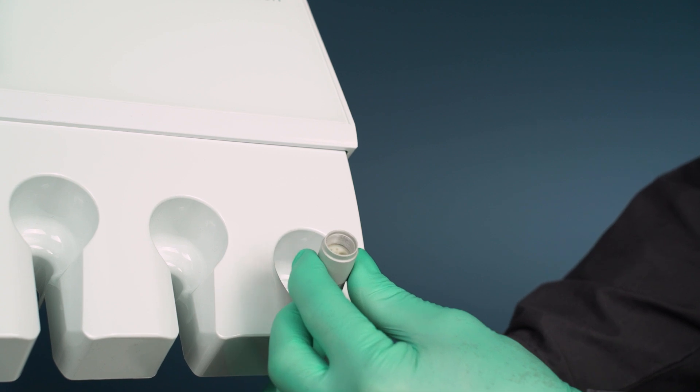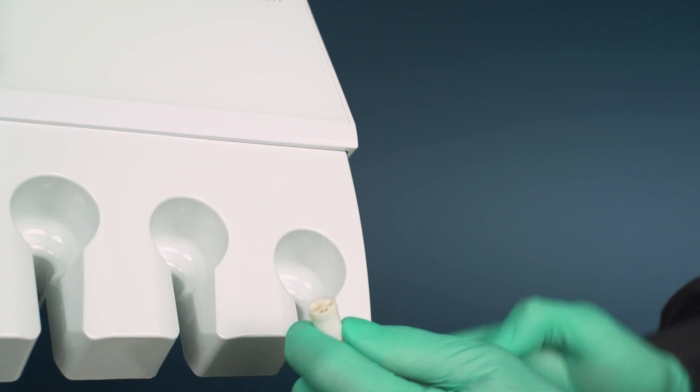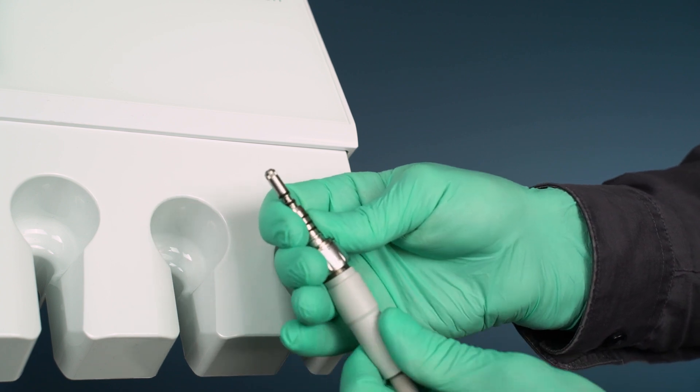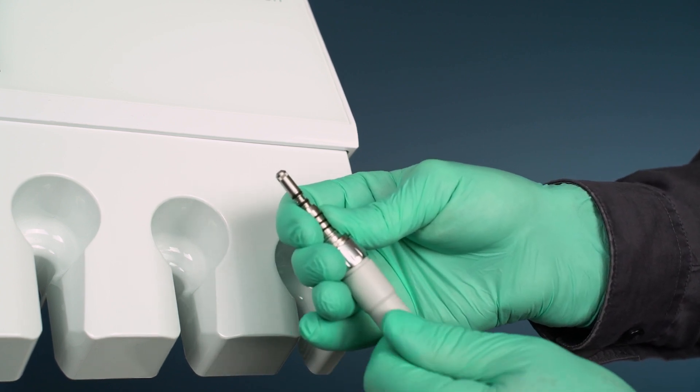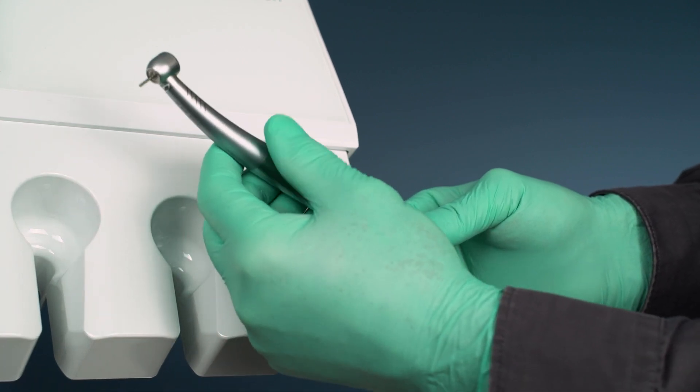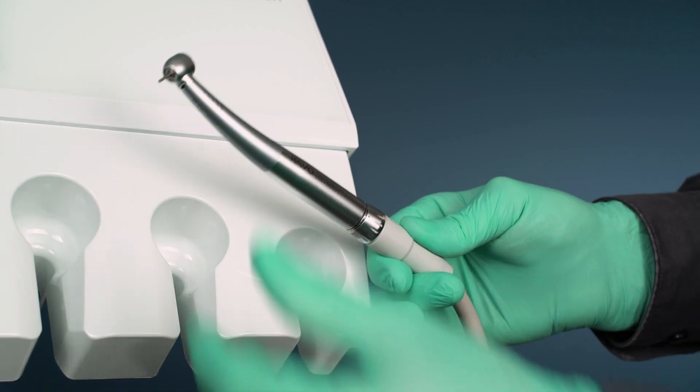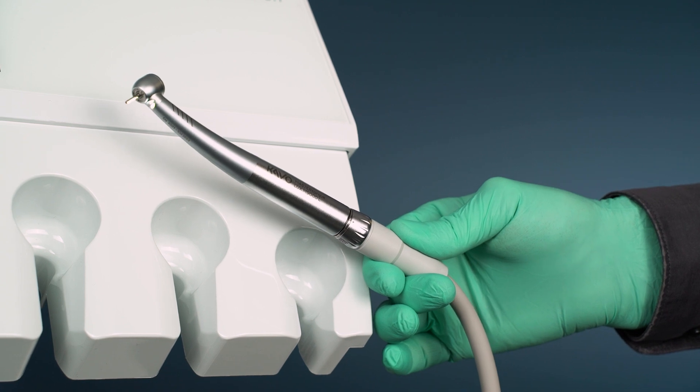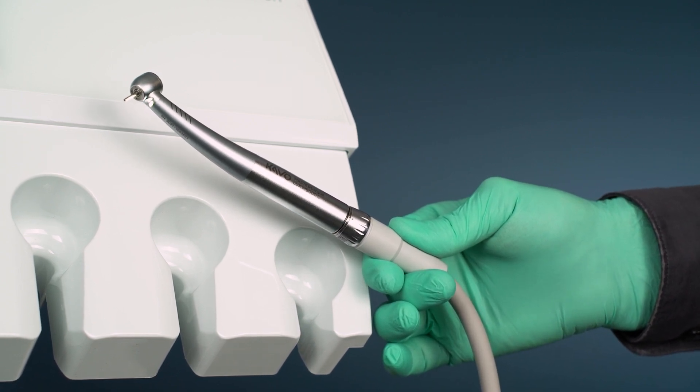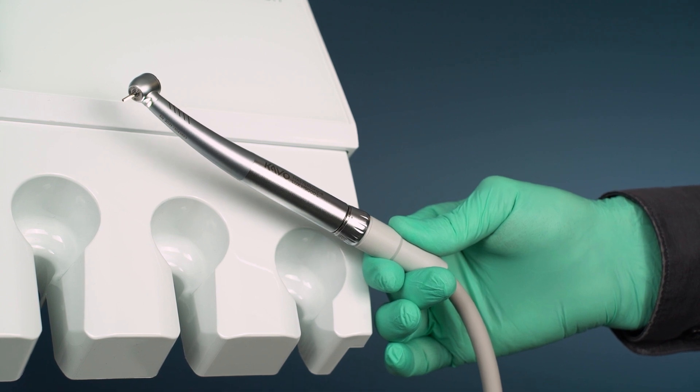The ISO turbine hose with driving air, spray air and spray water is able to run different driving systems as high speeds, intra-flex or air driven motors. The KEIWO Multiflex coupling is perfect for a fast and easy exchange of the different driving systems where the high speed instrument is the most used one.